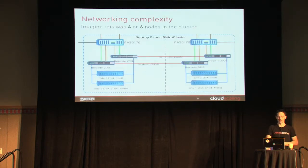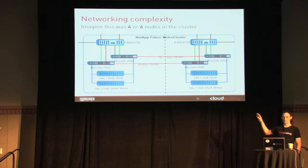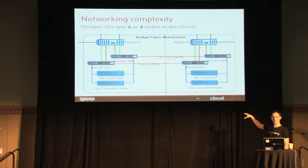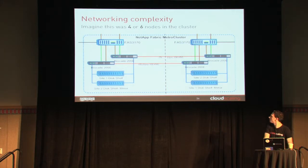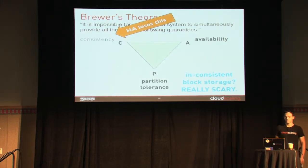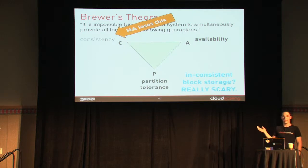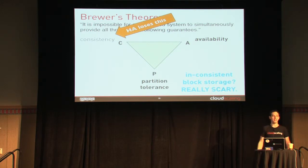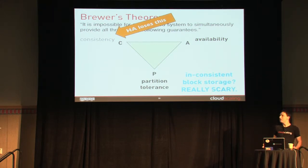This adds network complexity, and this is just to get high availability for one of those backends — you have to do this for each of those backends. Going back to Brewer's theorem: when you do HA, you decide to have really high availability and get reliability through partition tolerance and availability, which means you actually give up on consistency. That's why you get these split-brain problems. You trade away consistency, and that's really important for storage. It's really scary that people decide to give that up.